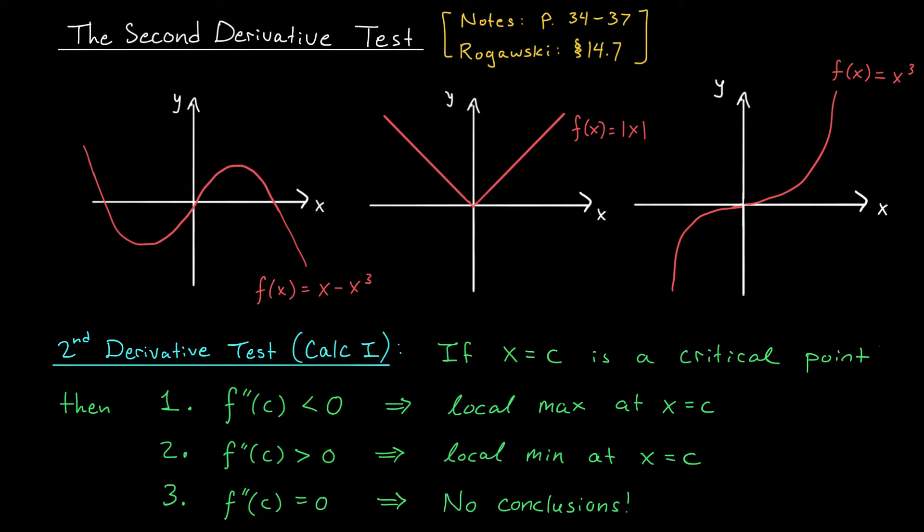This test says that if we start at a critical point x equals c, then we can often classify it as a local max or a local min based on the sign of the second derivative. In particular,